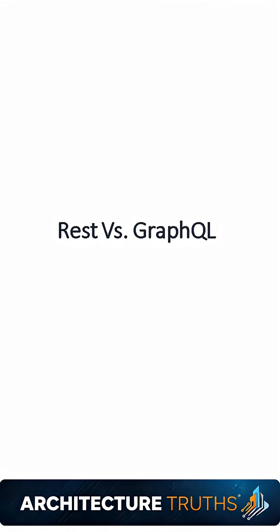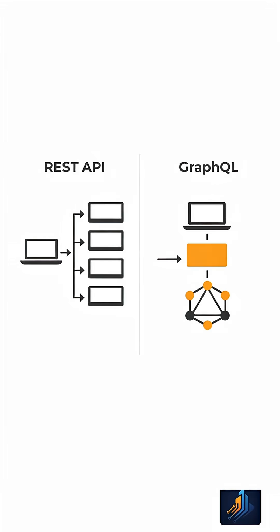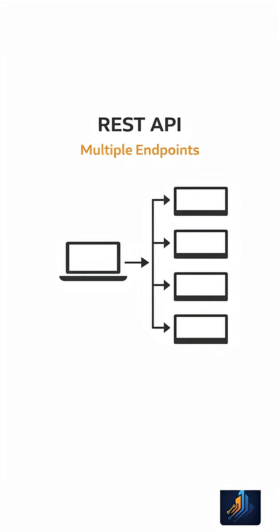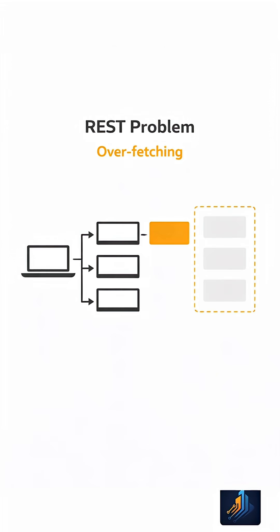REST vs GraphQL. REST and GraphQL solve the same problem but in very different ways. REST API exposes multiple endpoints, each designed for a specific resource. But REST often returns more data than the client actually needs. This is called overfetching.